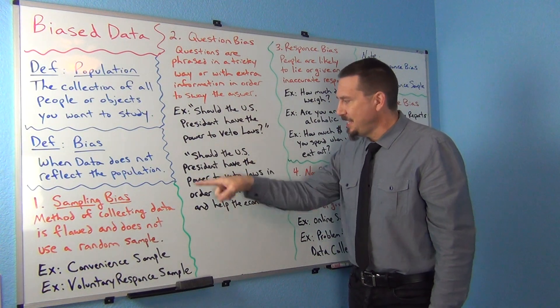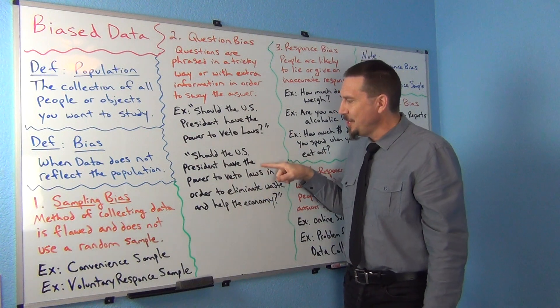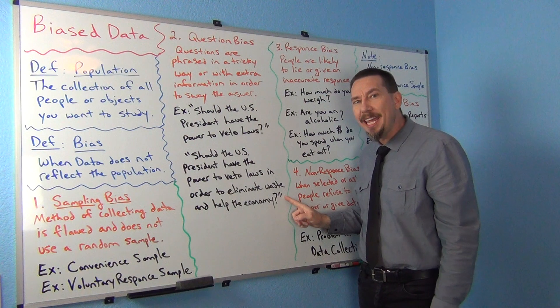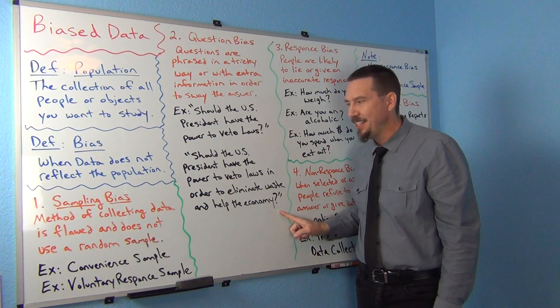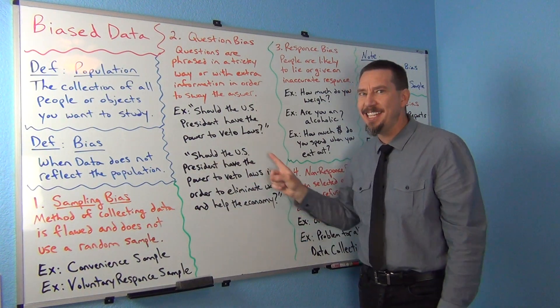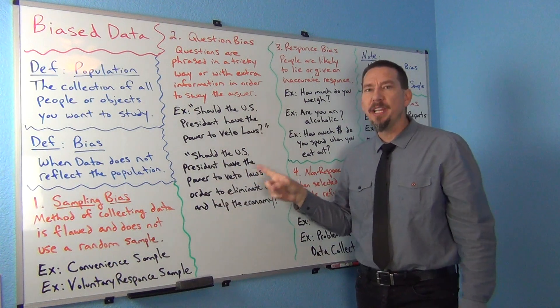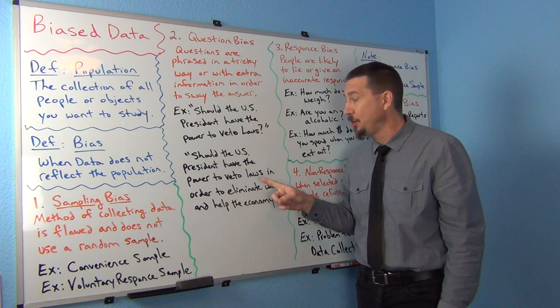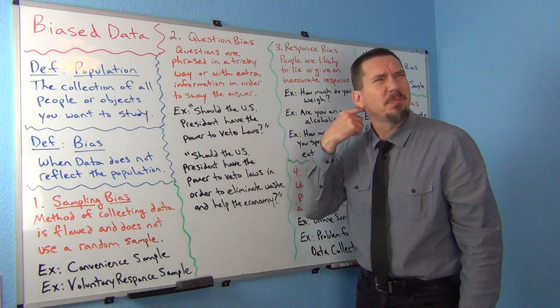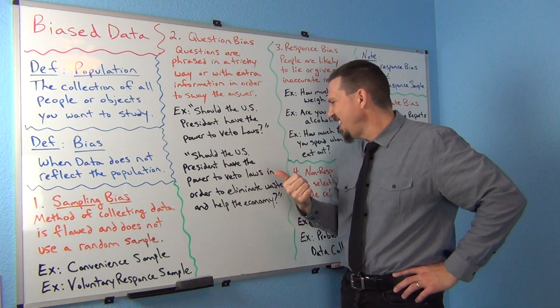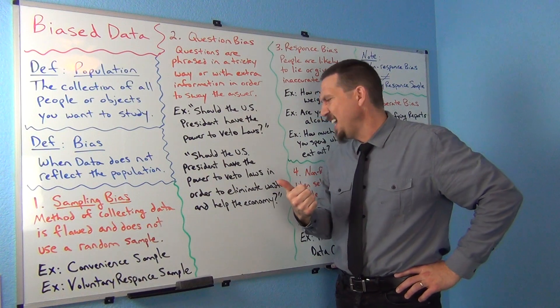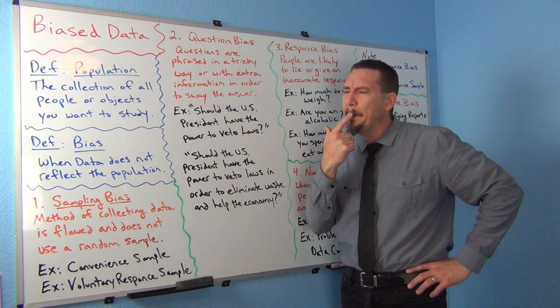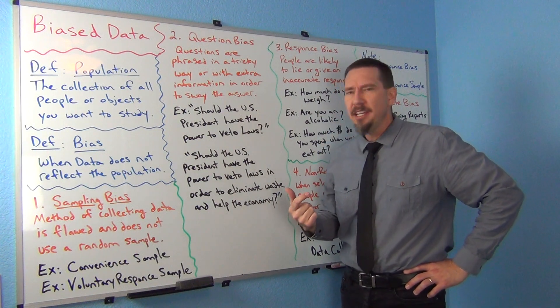But this is how they asked the question. Should the U.S. president have the power to veto laws in order to eliminate waste and help the economy? You see that? It's very sneaky. Because most people reading that, when they got that question, didn't know the question was actually about veto. They thought, oh, well, yeah, the U.S. president should eliminate waste and help the economy. Oh, yeah, that sounds about right. That sounds about what a president should be doing. So they would say yes.